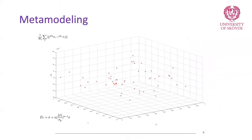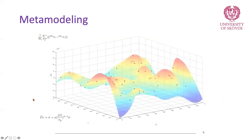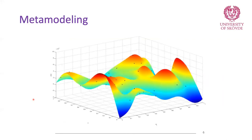Here is one example from an industrial case study — the same problem of finding material parameters where you want to minimize the difference between simulation and experiment. These are the design points and the responses. I created a metamodel on that and here is how it looks. Instead of running finite element simulations, I can find the response or error for any of the points in the decision space by inputting the variables into the function.